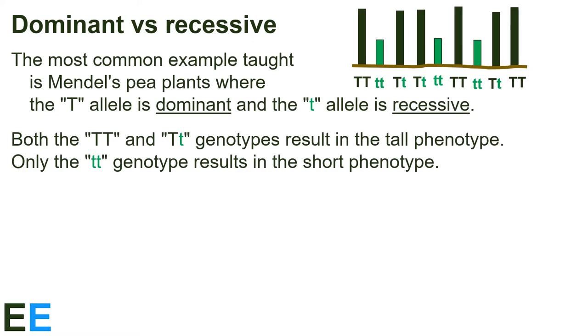It's helpful to contrast dominant alleles with recessive ones. The most common example taught in biology classes is Mendel's pea plants, where the capital T allele is dominant and the lowercase t allele is recessive. Both the TT and Tt genotypes result in the tall phenotype, while only the tt genotype results in the short phenotype. The heterozygotes resemble the homozygote for the dominant allele, which in this case is the tall allele.